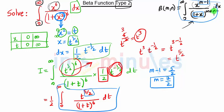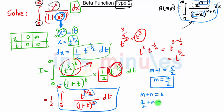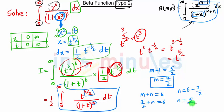When we compare the denominator we get m plus n equal to 6. So m plus n equals 6, and m is 7 by 2, so n will be 6 minus 7 by 2. Cross-multiplying, 12 minus 7 is 5, so n is 5 upon 2.